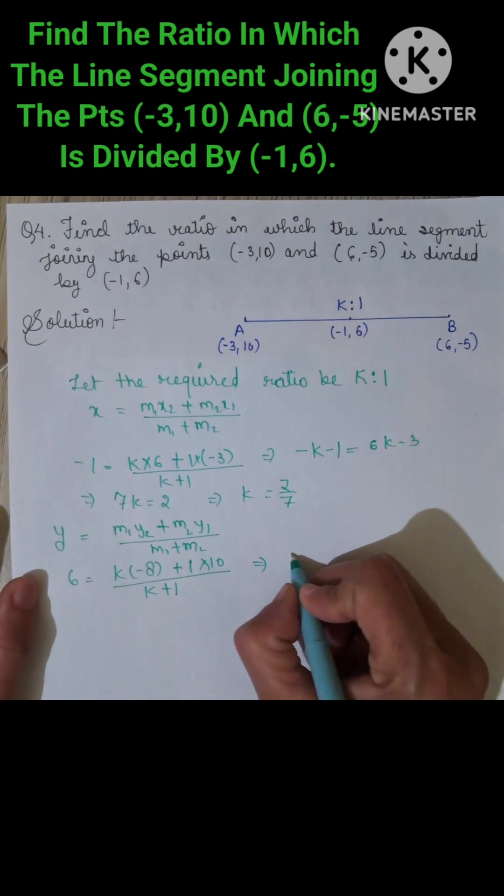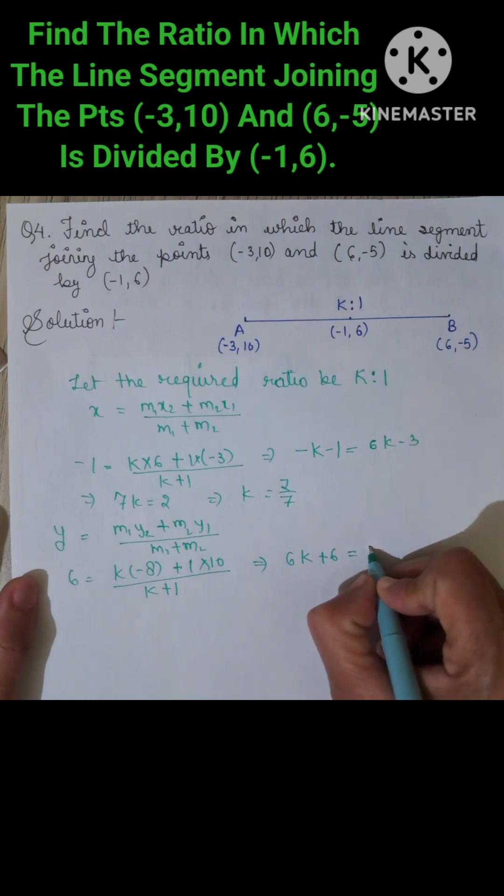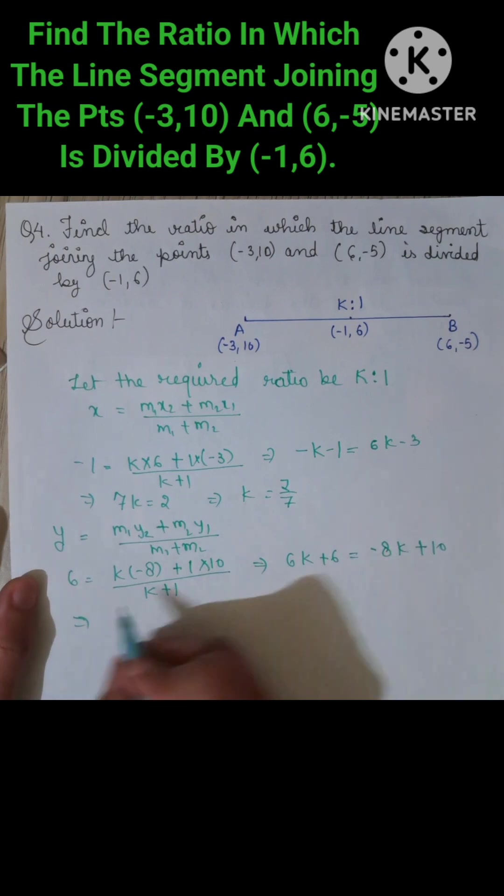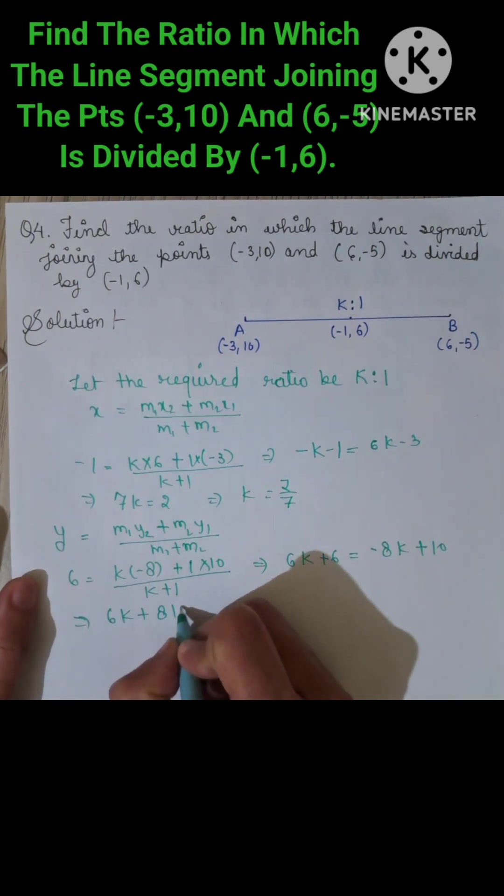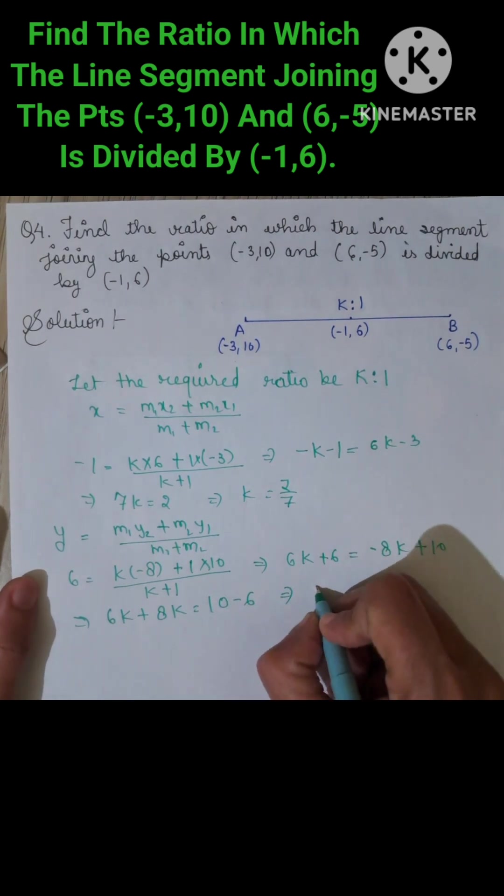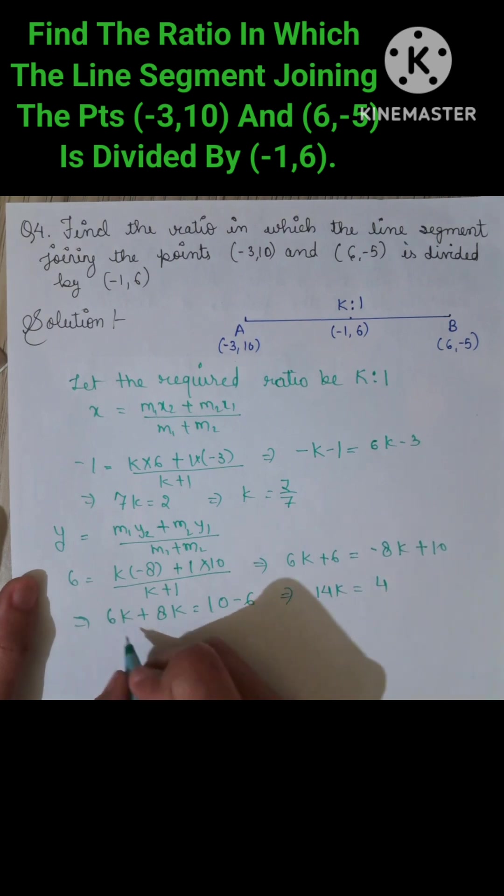Solving, 6K + 6 equals -8K + 10. Therefore, 6K + 8K equals 10 - 6, which gives 14K equals 4.